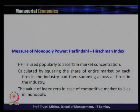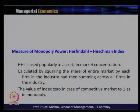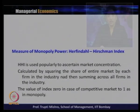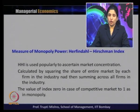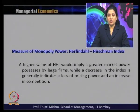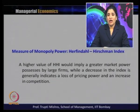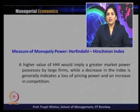The third measure is the HHI Index, popularly used to assess market concentration. It is calculated by squaring the market share of each firm in the industry and then summing across all firms. The value ranges from 0 in case of a competitive market to 1 in case of a monopoly. A higher HHI value implies greater market power possessed by large firms, while a decrease in the index indicates a loss of pricing power and an increase in competition.